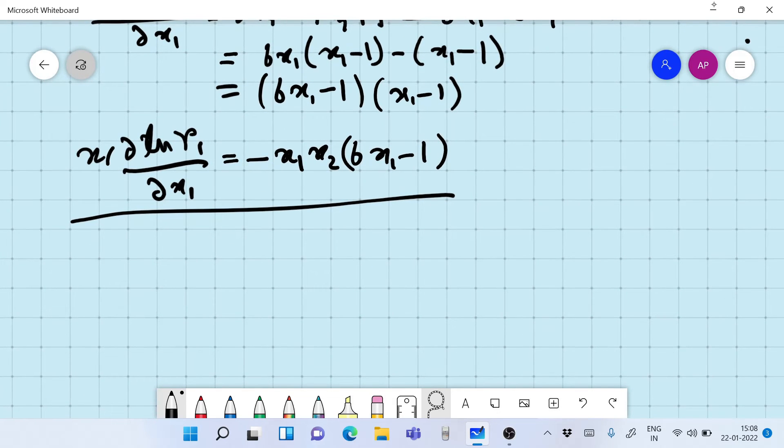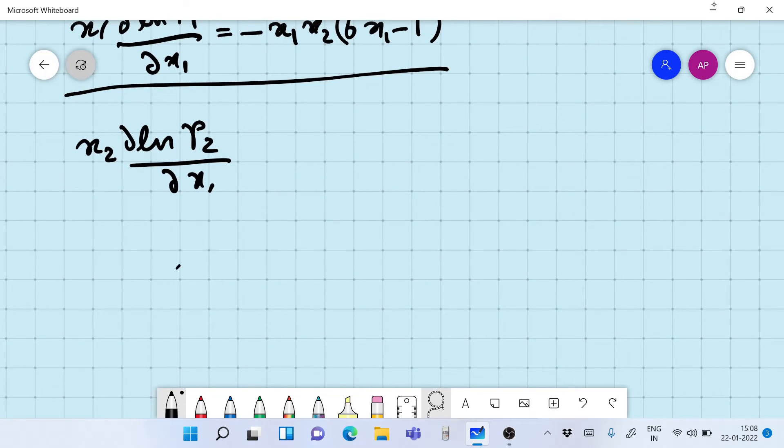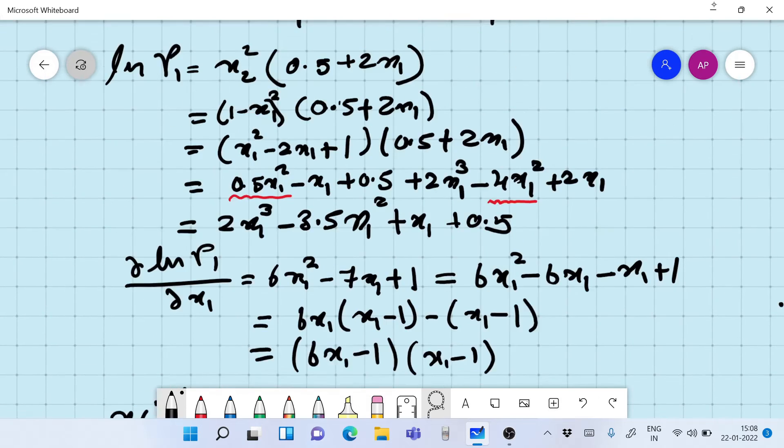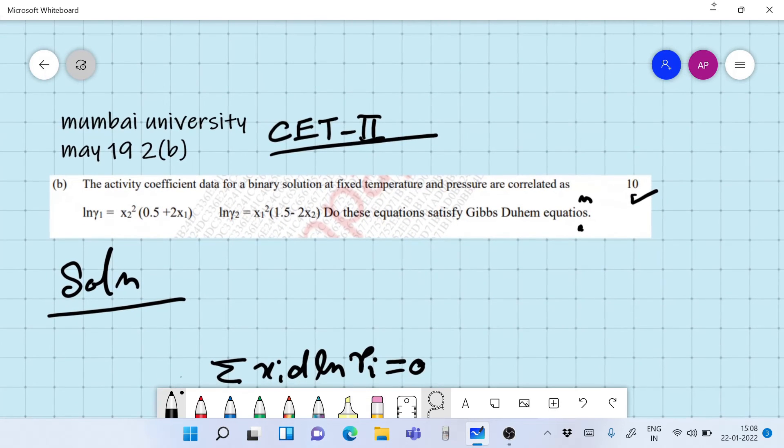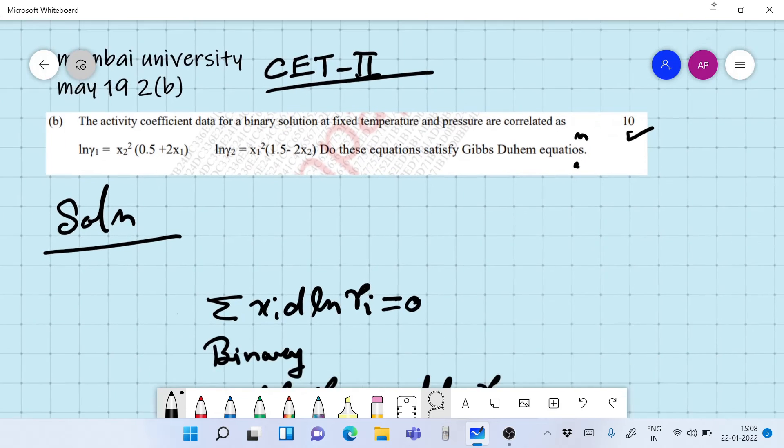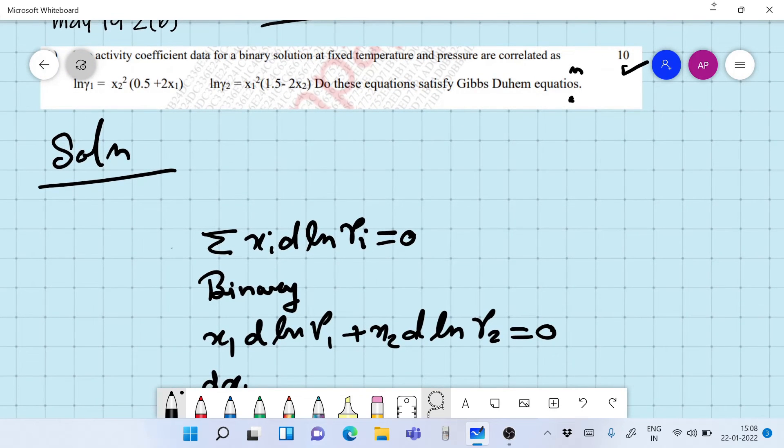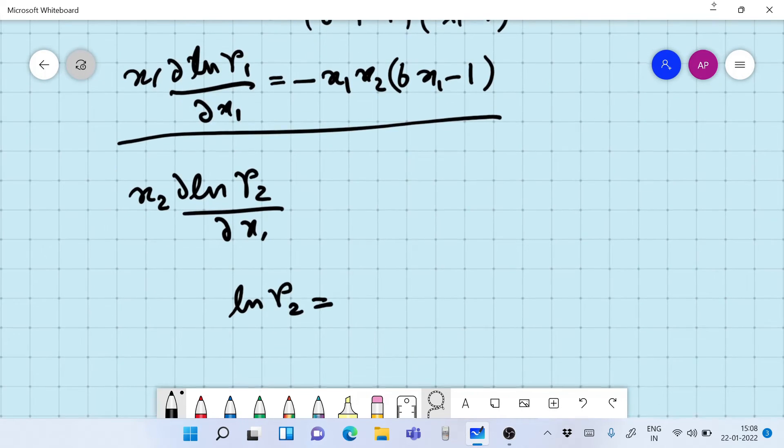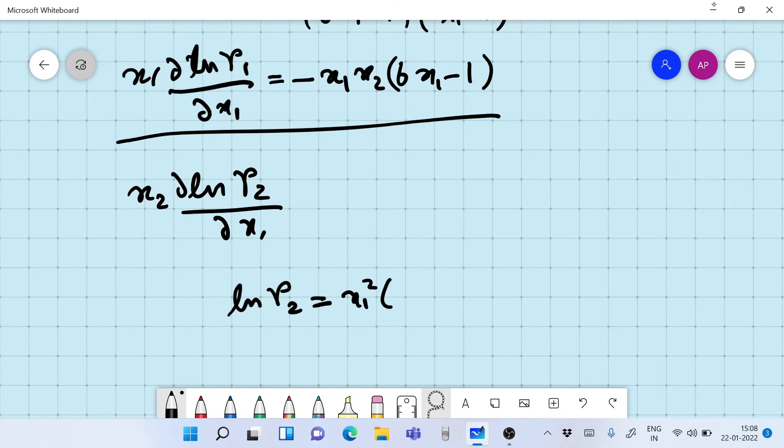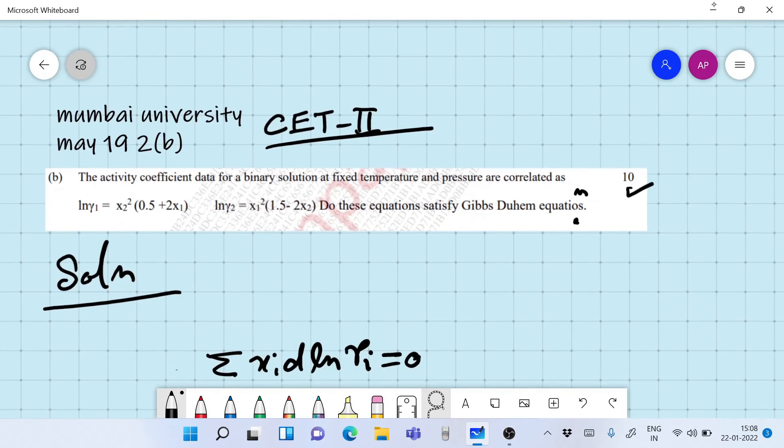This finally multiplied with x1, d ln gamma 1 by dx1 is going to be equal to, we can rewrite this as x1 minus 1 will be minus x2, and so it's going to be minus x1 x2 times 6x1 minus 1. This is what we have got of this term.